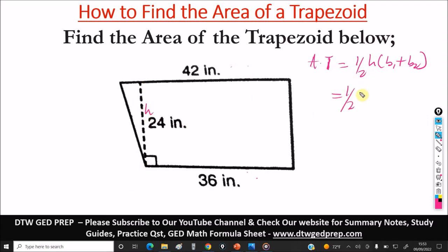So we do this. Half times height, that's times 24. In parentheses, b1 plus b2, that's 42 plus 36.